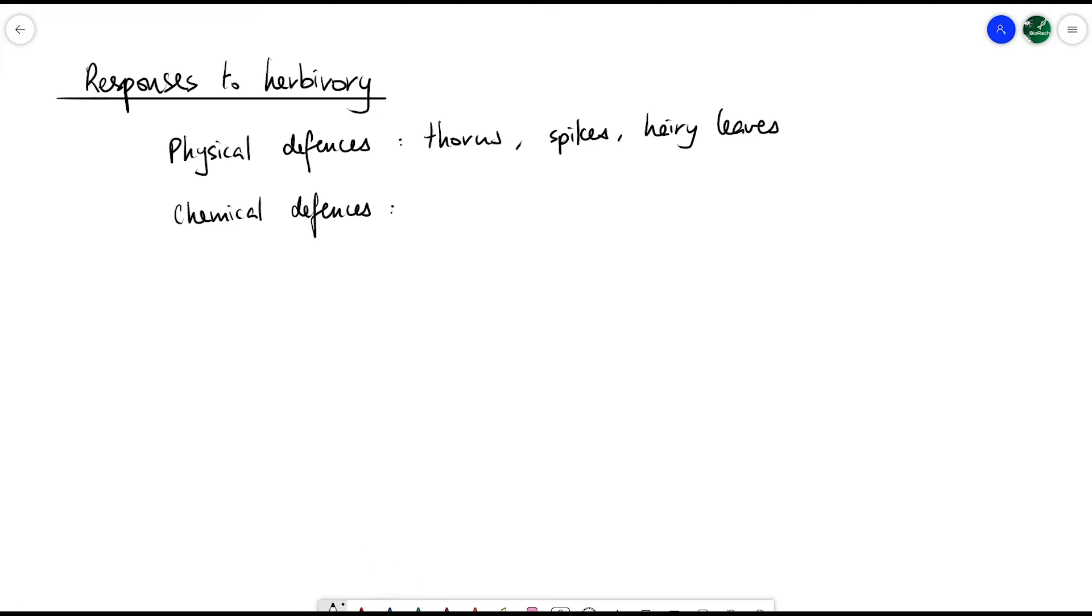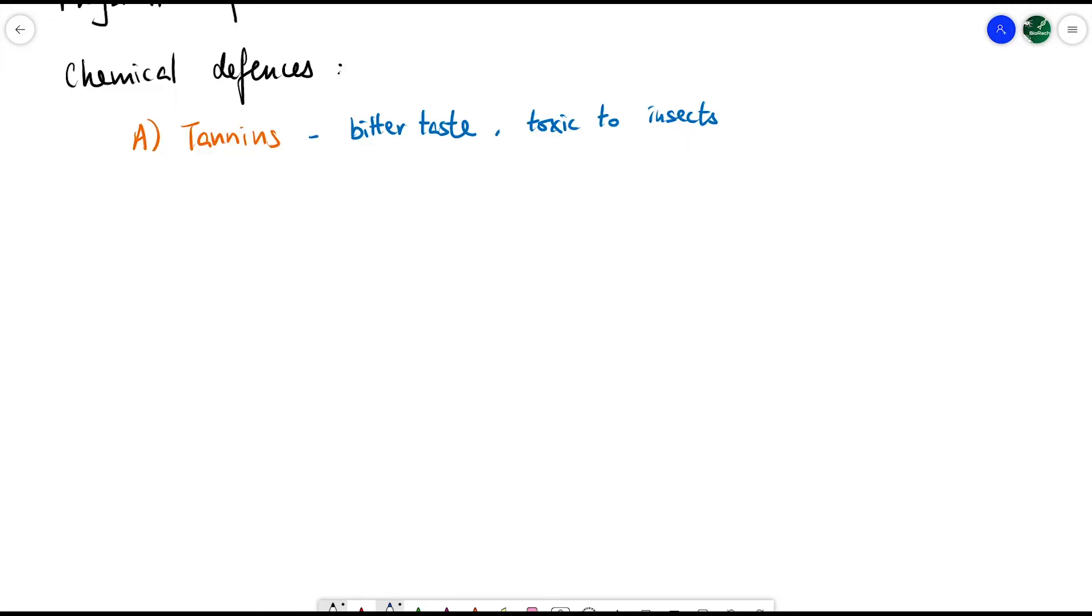There are five types of chemical defenses. The first is tannins, which have a bitter taste and are toxic to insects. It's about the learning mechanism - how animals realize they shouldn't eat it a second time.